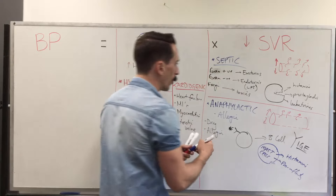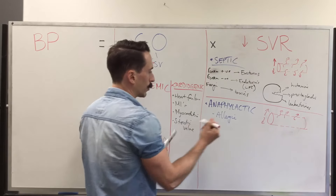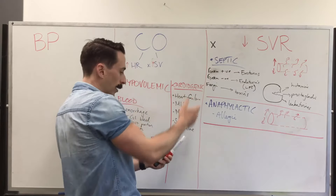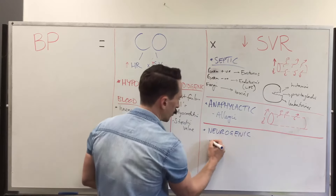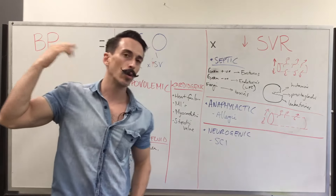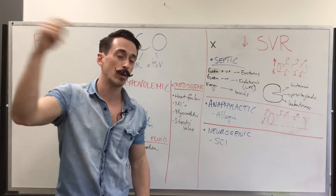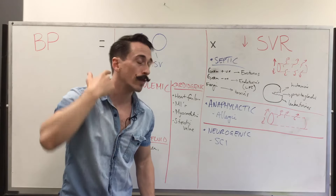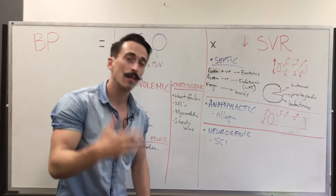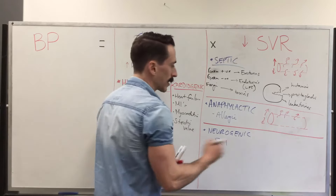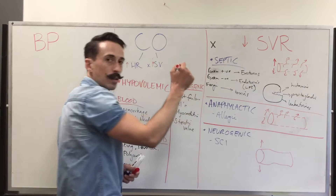The last type of shock is neurogenic shock. Neuro meaning nervous system, genic meaning origin — so this is an issue with the nervous system. It predominantly occurs in individuals who have suffered a spinal cord injury, which affects the autonomic nervous system, more specifically the sympathetic nervous system, which helps constrict blood vessels and increase blood pressure. Because the injury damages the fibers that innervate the blood vessels, the vessels can't constrict and end up dilating, so systemic vascular resistance drops.